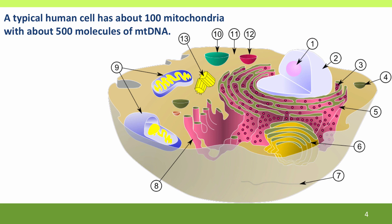A typical human cell has about 100 mitochondria — of course it depends a lot on the function of the cell, as cells that need to produce a lot of energy have many more. There are about 500 molecules of mitochondrial DNA per 100 mitochondria, so each mitochondrion might have about five DNA molecules. Mitochondrial DNA is circular, like the genomes of bacteria, not linear.